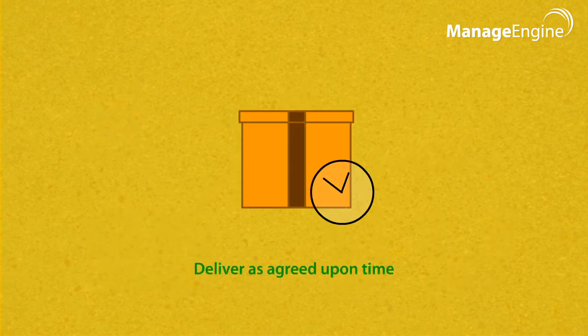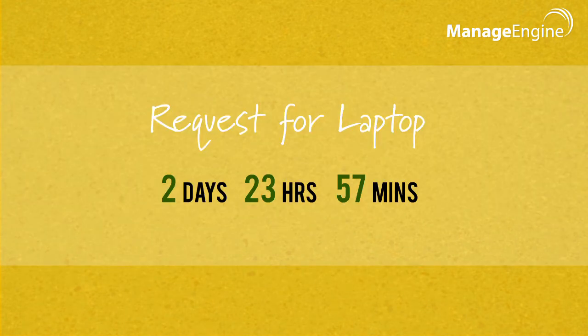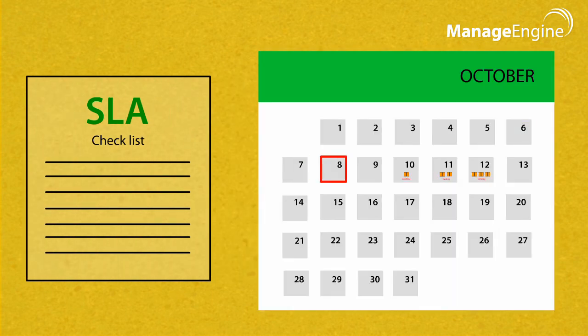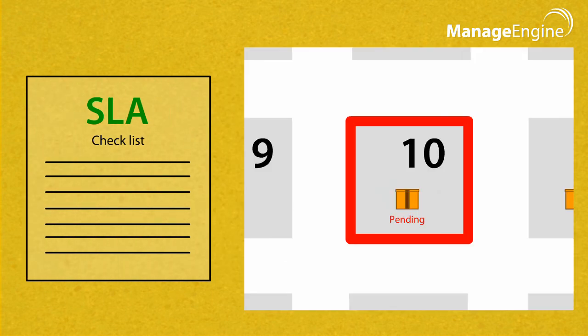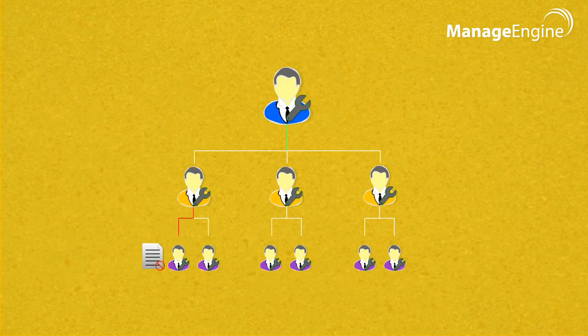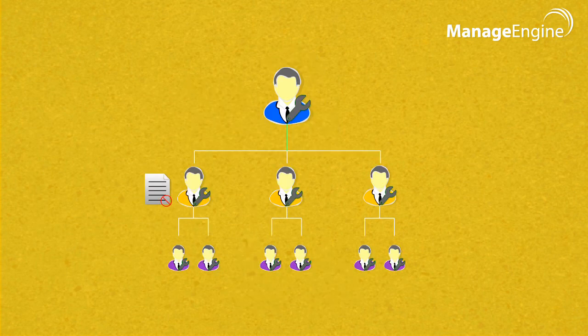Deliver as agreed upon time. The service catalog also captures the delivery time so that users will know the wait time for the service to be delivered. Defining the delivery time for each service is decided by the service level agreement, which ensures that the request is delivered as agreed upon. The request gets escalated automatically to the next level technician when the service is not delivered.